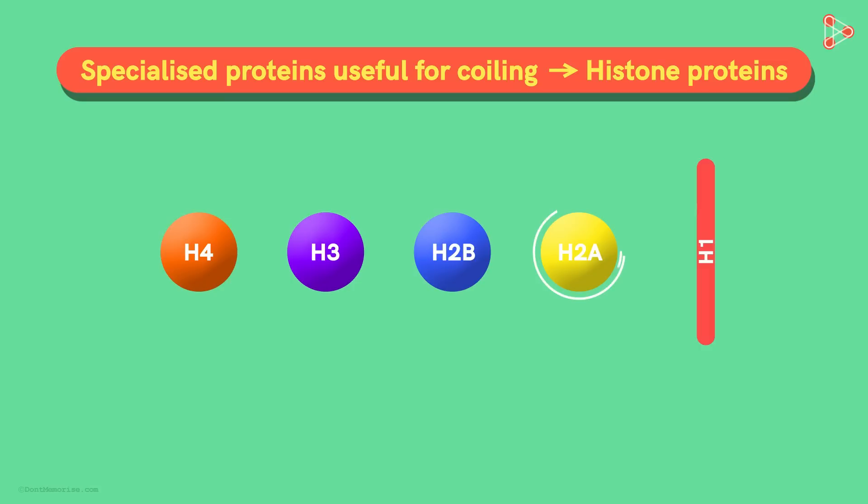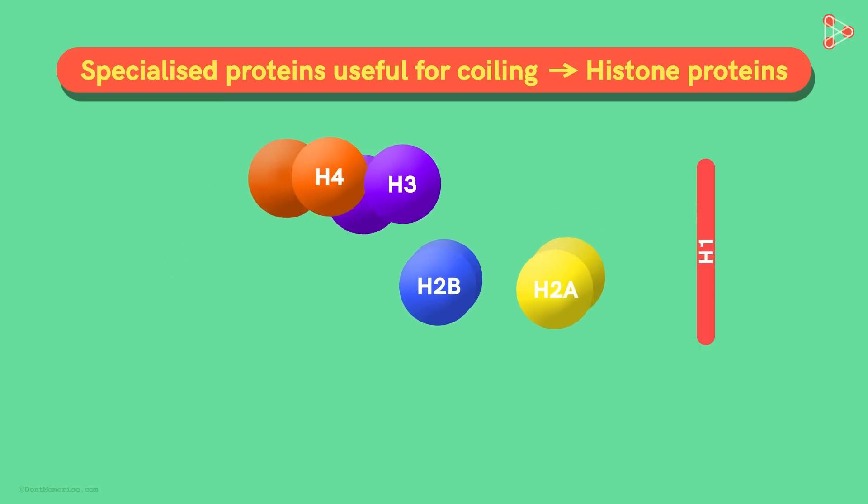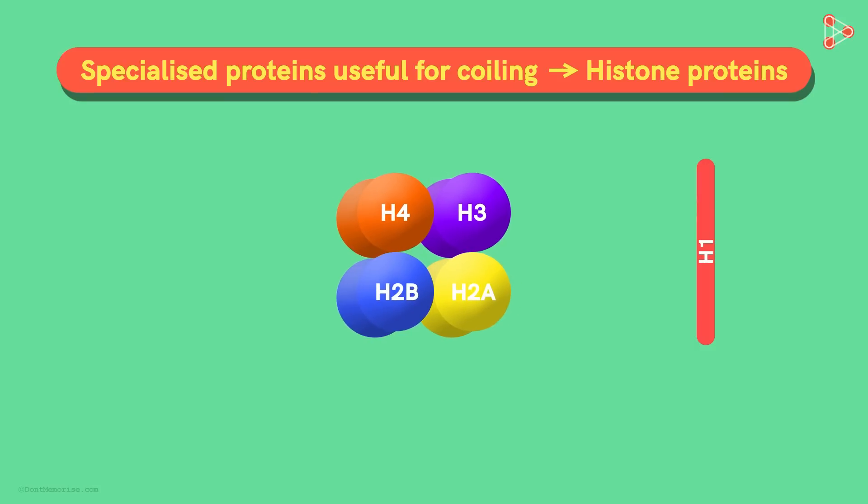Among these, the H2A, H2B, H3, and H4 come in doubles to form a ball-like structure which looks somewhat like this! The stretch of DNA then easily wraps around this octamer formed!